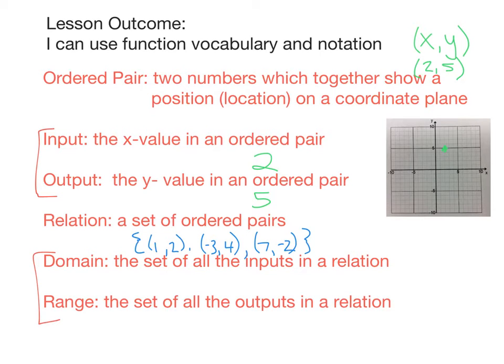So now the domain is the set of all inputs in a relation, like this one right here. So I could now list all of my inputs. The set of all inputs, so here's an x value right here, and an x value right here, and an x value right here. So our inputs are 1, negative 3, and 7. So that is our domain.